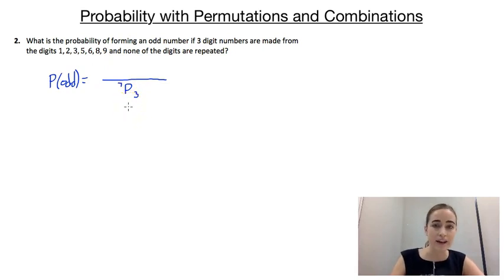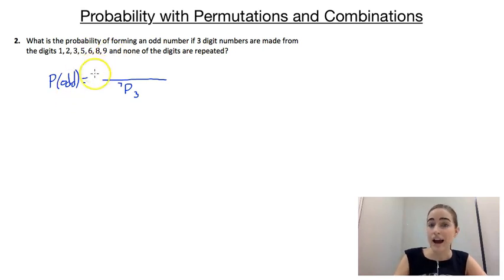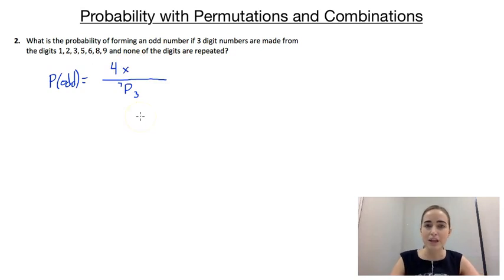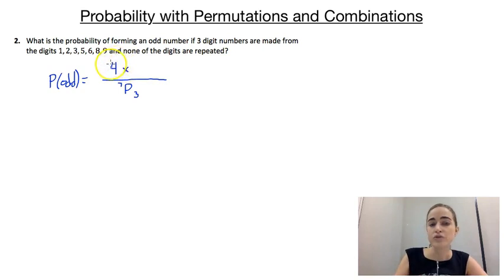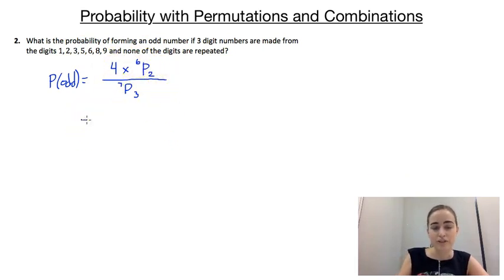We only want to consider the three-digit odd numbers. Looking at the last digit, it has to be odd, so it could be 1, 3, 5, or 9 — that's four different options. We then multiply by the number of options for the other two digits: having used one digit already, we have six options left and we pick two of them — that's 6P2. Putting all of that in the calculator gives us four over seven as our probability.